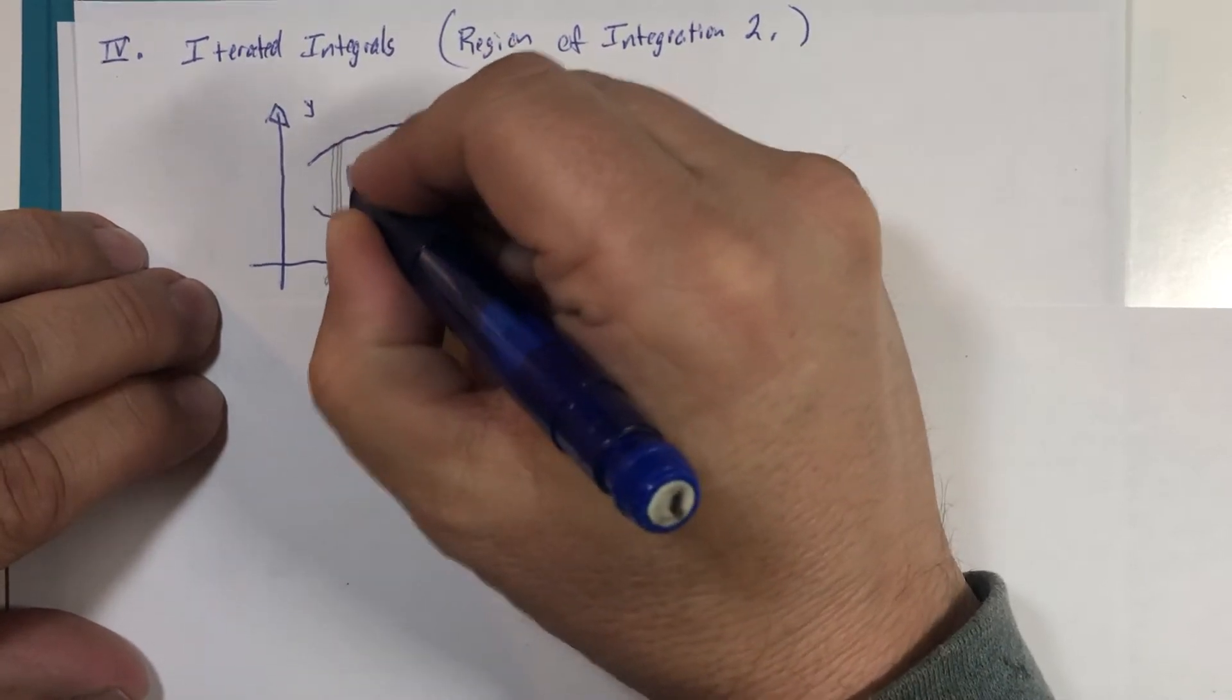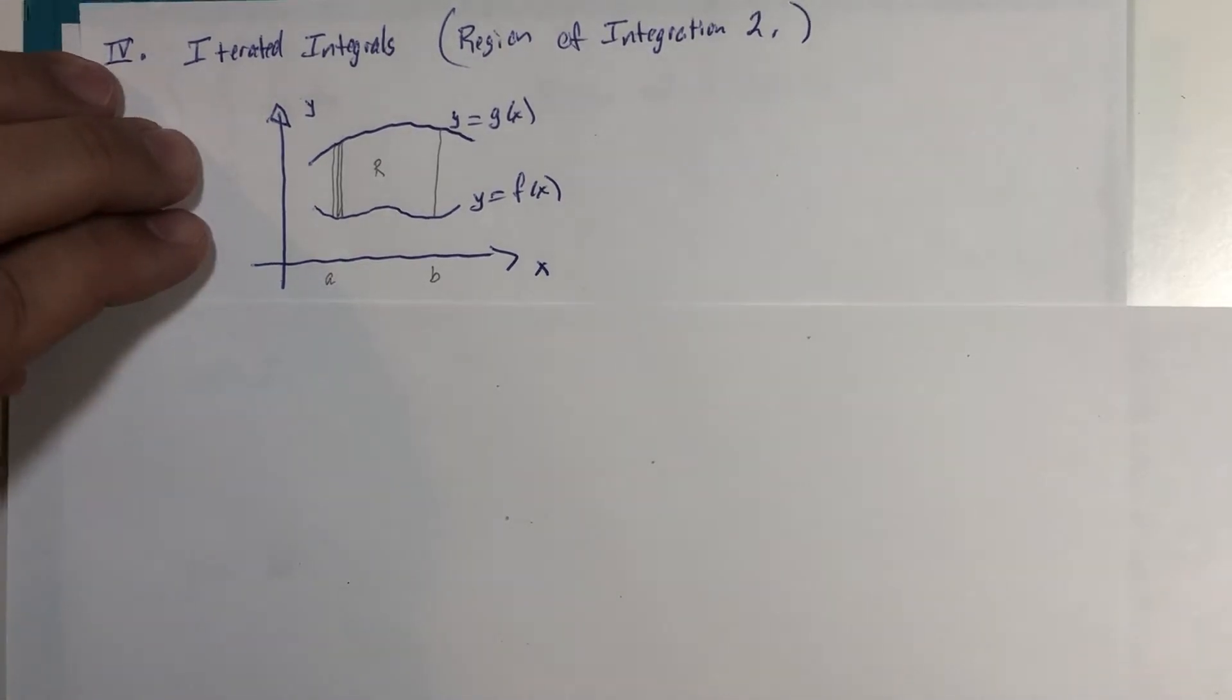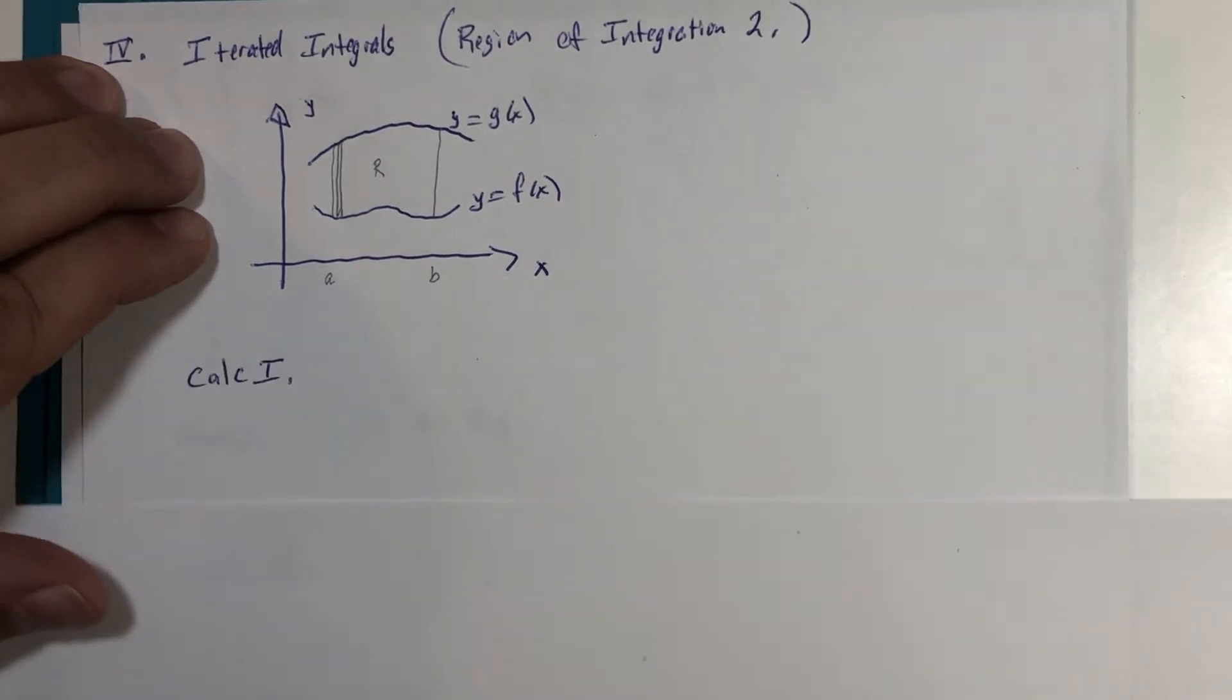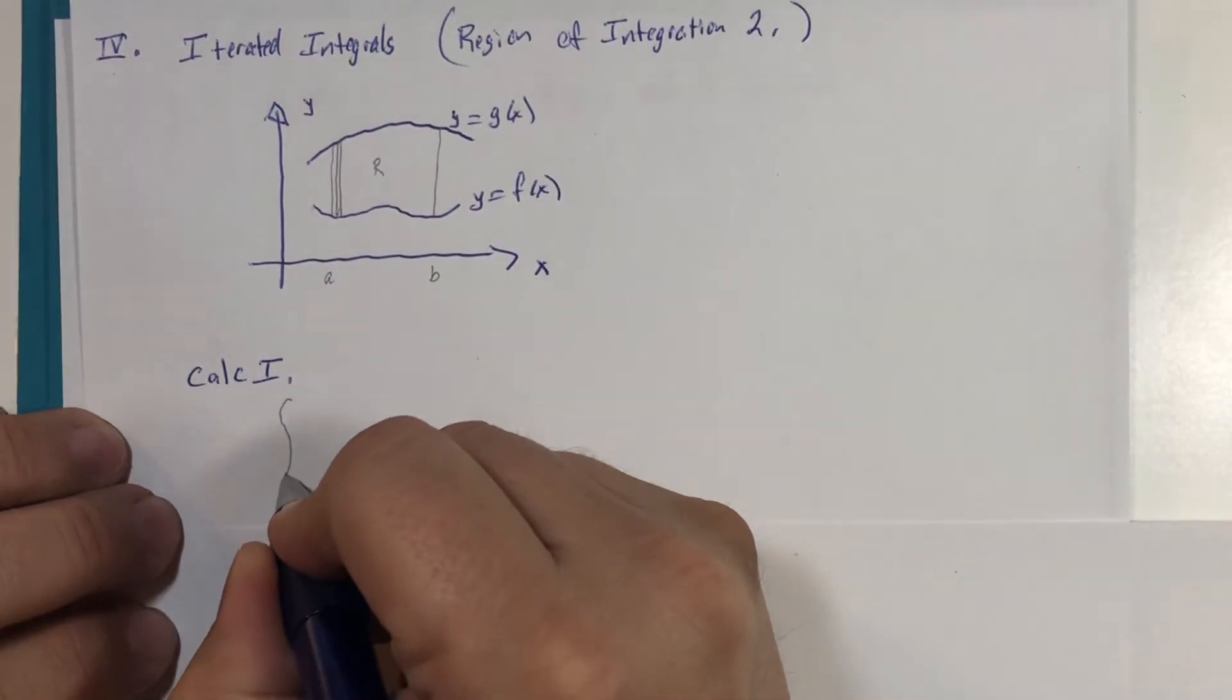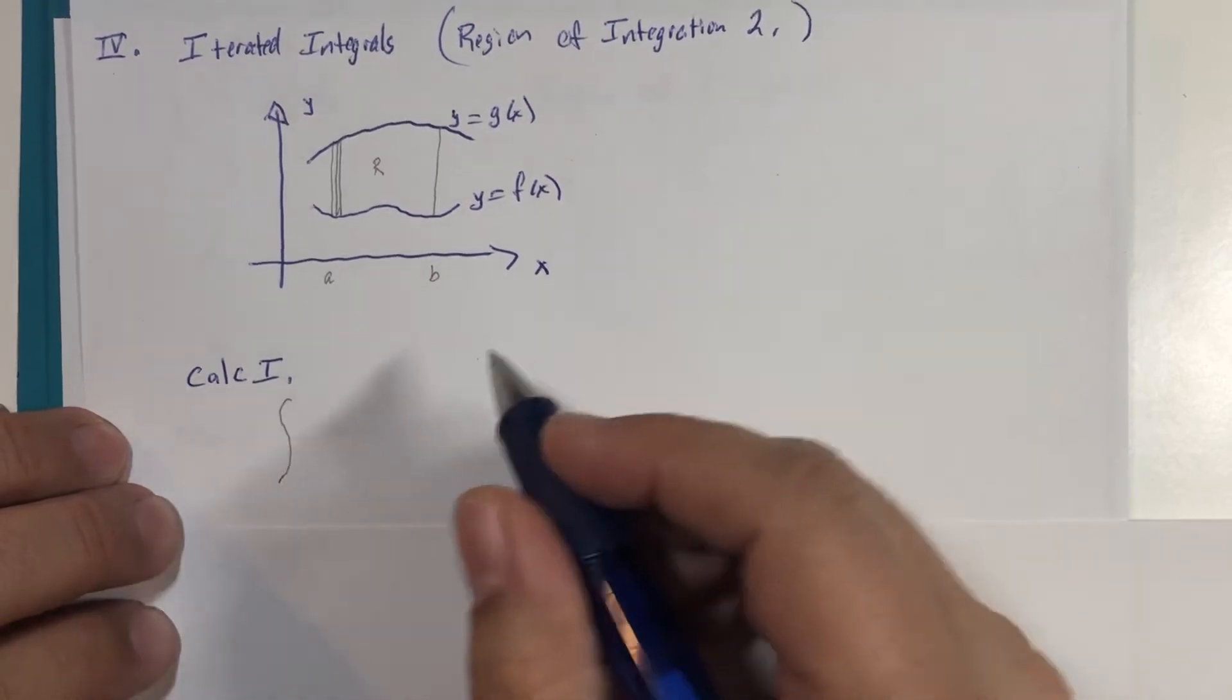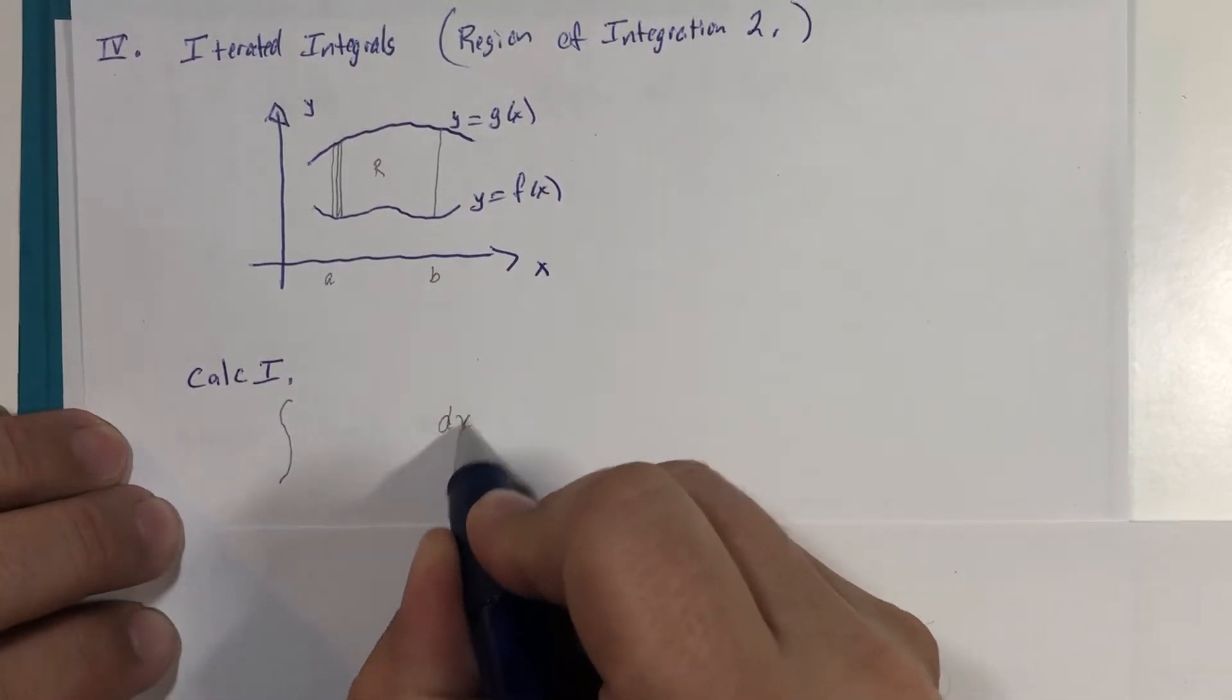We might look at dividing this into n regular rectangular divisions and a limit process would ensue, but ultimately we would end up with this double integral, the calc one version, a single integral.